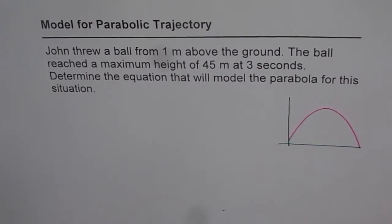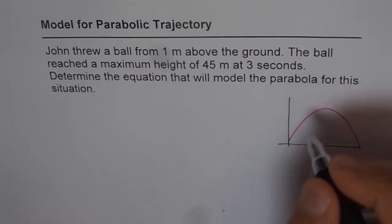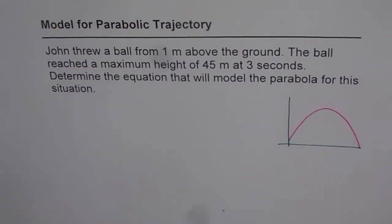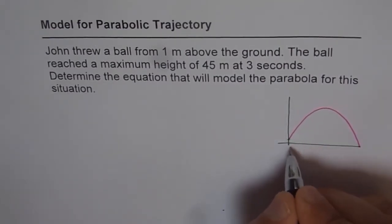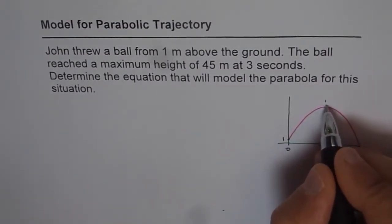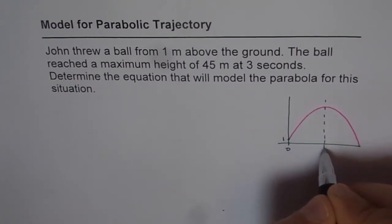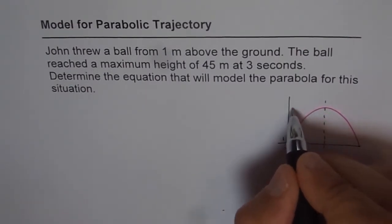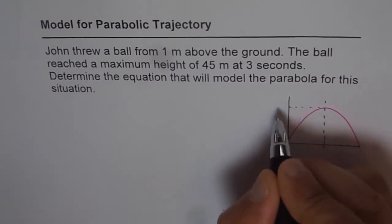So that is the trajectory path which we are talking about and what we are saying is that the initial height when t equals 0 is 1 and when t equals 3 at that time the ball reaches the maximum height of 45 meters, right? So this is 45 meters.